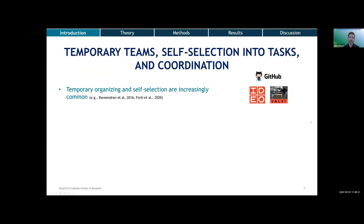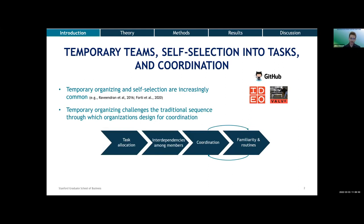This is interesting for two reasons. First, there are lots of organizations where work is temporary and organized into projects. There are also more and more organizations where people are allowed to decide for themselves which tasks they want to work on. This is especially interesting when it comes to task allocation because these settings potentially reverse the temporal ordering we usually assume between task allocation and the process through which people learn to work together, coordinate, and build routines. In traditional organizations, people work together for extended periods, and we think of task allocation coming first and collaboration second.